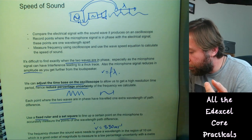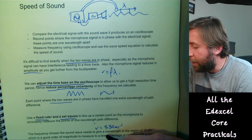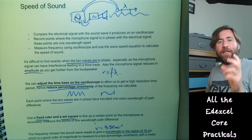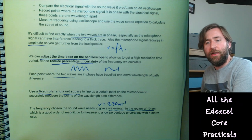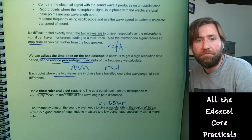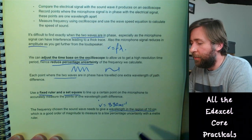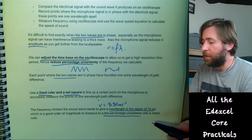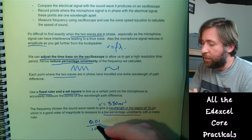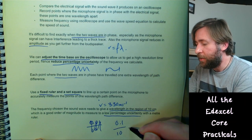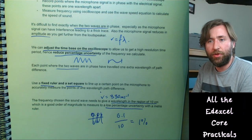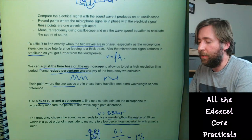If your metre ruler has a 1 mm scale and you measure something of 10 cm, your percentage uncertainty is about 1%, which is low enough — we're looking for below about 2–5%. The key theme of all these core practicals is reducing the percentage uncertainty, either through very fine resolution instruments or by measuring as large a quantity as possible.